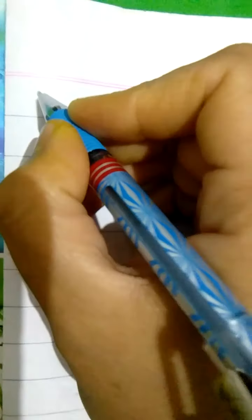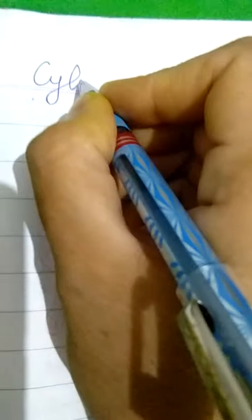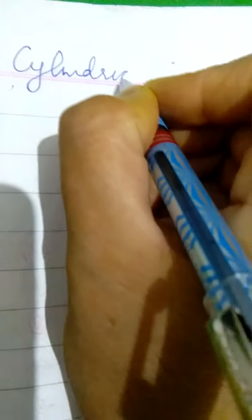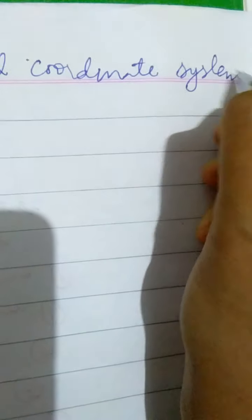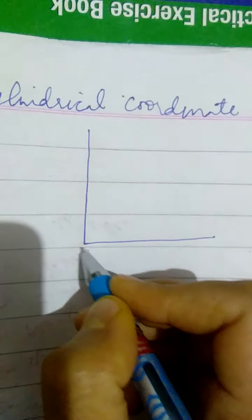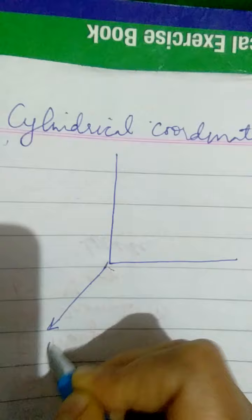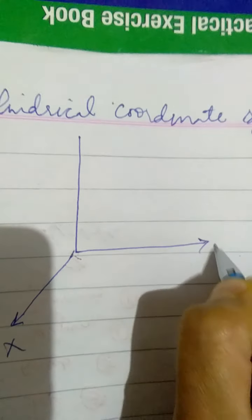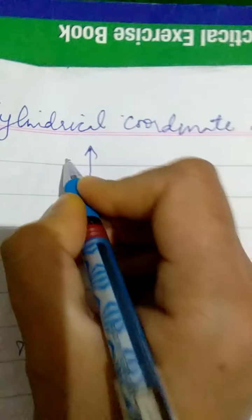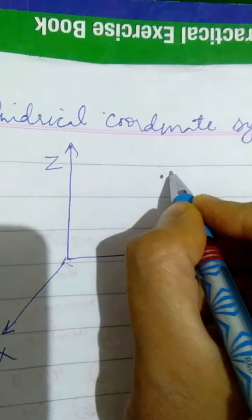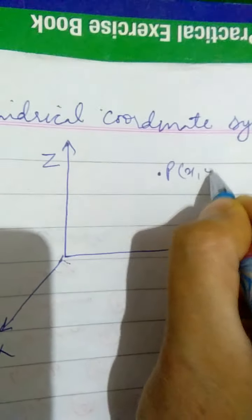Dear students, today we will be discussing about the cylindrical coordinate system. Now imagine a point in a three-dimensional space. Suppose this is the x-axis, this is the y-axis, and this is the z-axis. This is the point in which you are interested, whose coordinates are x, y, and z.